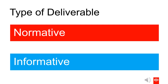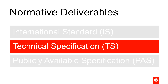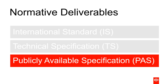As we get into further detail about each deliverable type, let's first make a distinction between normative and informative documents. International Standards, Technical Specifications, and Publicly Available Specifications are considered normative deliverables. These are documents that can contain requirements, recommendations, permissions, possibilities, and capabilities.